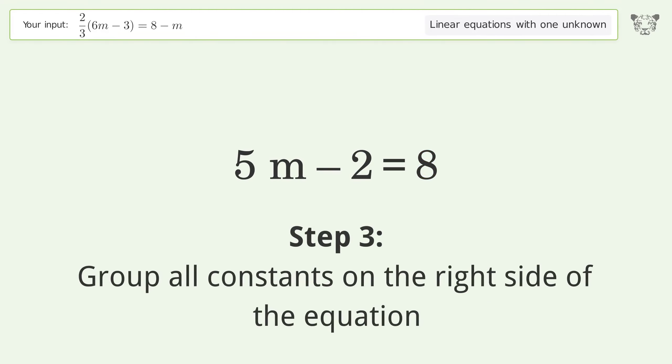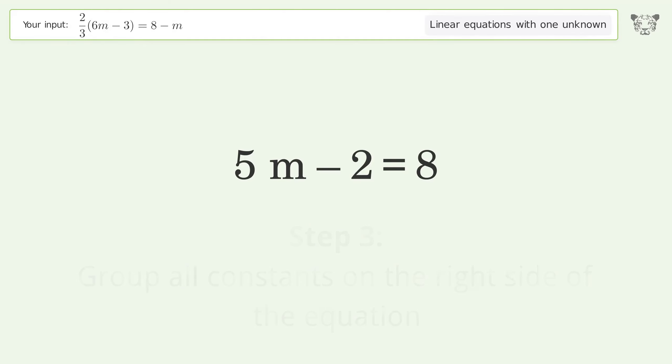Group all constants on the right side of the equation. Add 2 to both sides. Simplify the arithmetic.